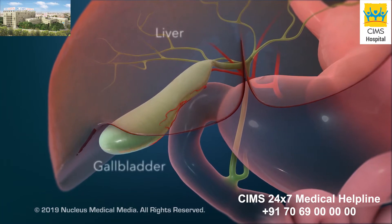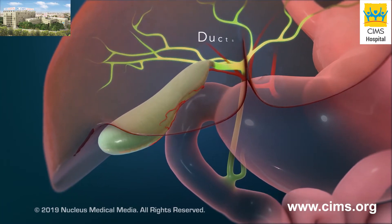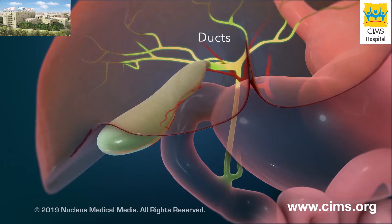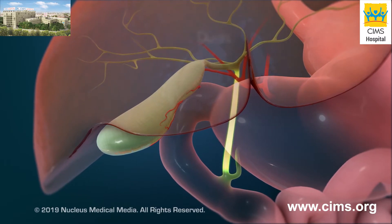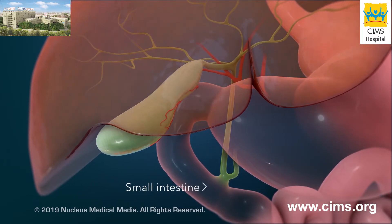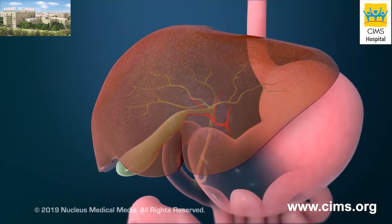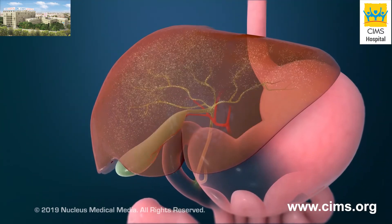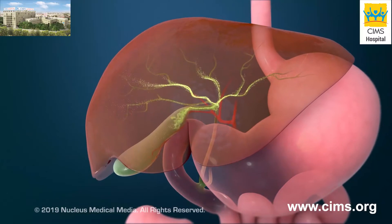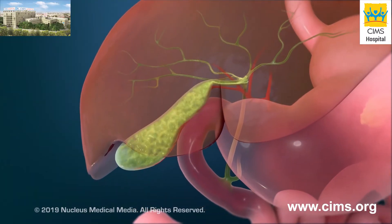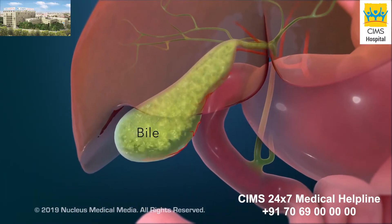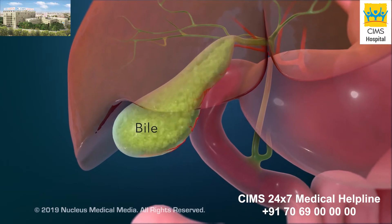Your liver and gallbladder have small tubes coming out of them called ducts. These ducts merge together into one large duct that attaches to your small intestine. Your liver makes bile, a fluid that breaks down fat in food you eat. Between meals, most bile flows through the ducts into your gallbladder and is stored there.